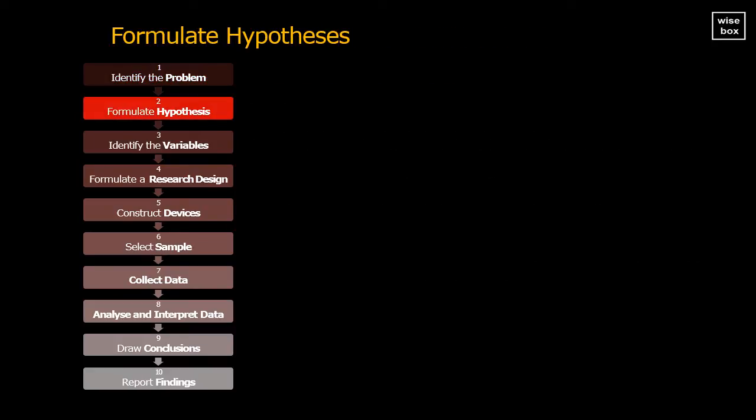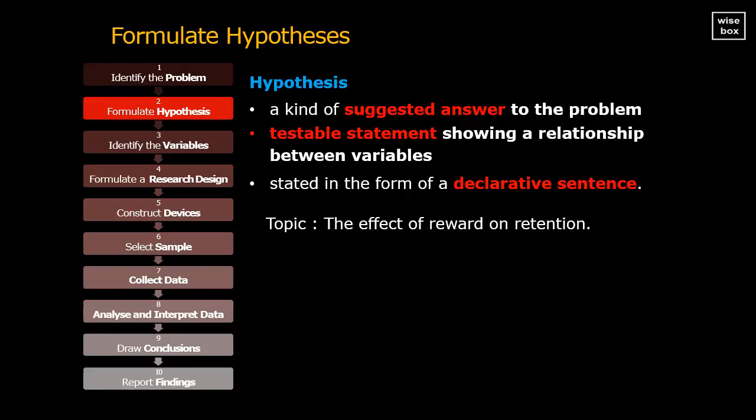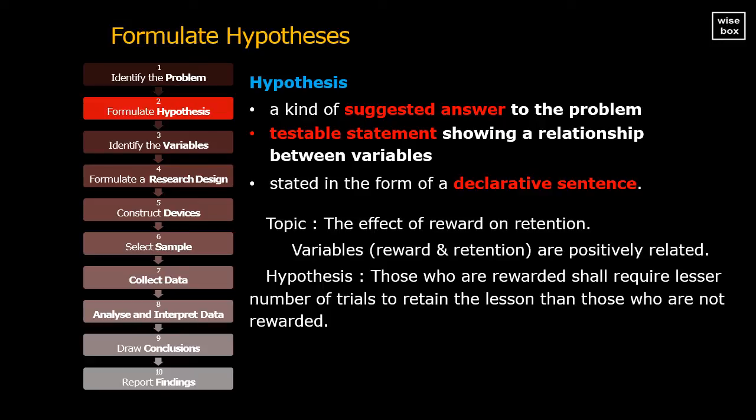The second step in the research process is to formulate the hypothesis. A hypothesis is a kind of suggested answer to the problem. It may be defined as a testable statement showing a relationship between variables under study. It is stated in the form of a declarative sentence. For example, you are interested to know the effect of reward on retention. From analysis of past research, you've found that the two variables are positively related. To convert this idea into a testable statement, you developed these hypotheses. Those who are rewarded shall require lesser number of trials to retain the lesson, than those who are not rewarded.